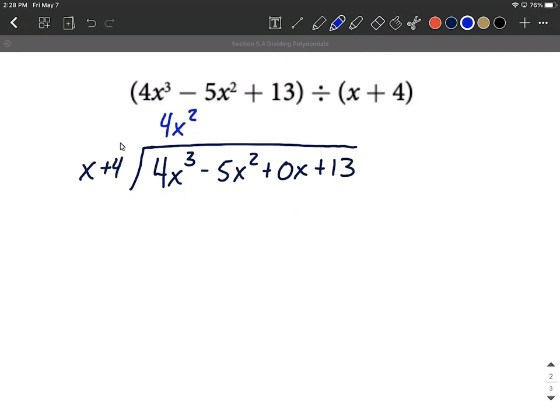Whatever you put in the quotient here you're going to distribute to each one of these terms. So sure enough 4x² times x makes 4x³. Then we also have to be careful: 4x² times 4 is going to make positive 16x², and then the x² comes along.